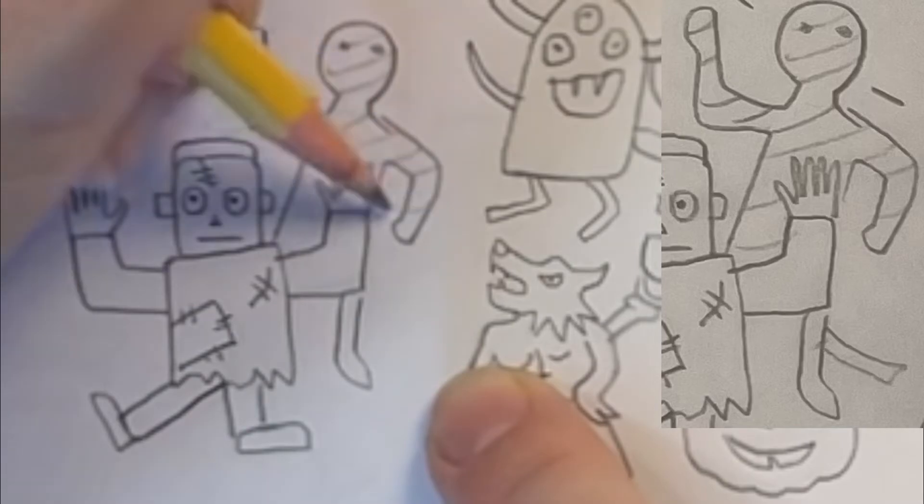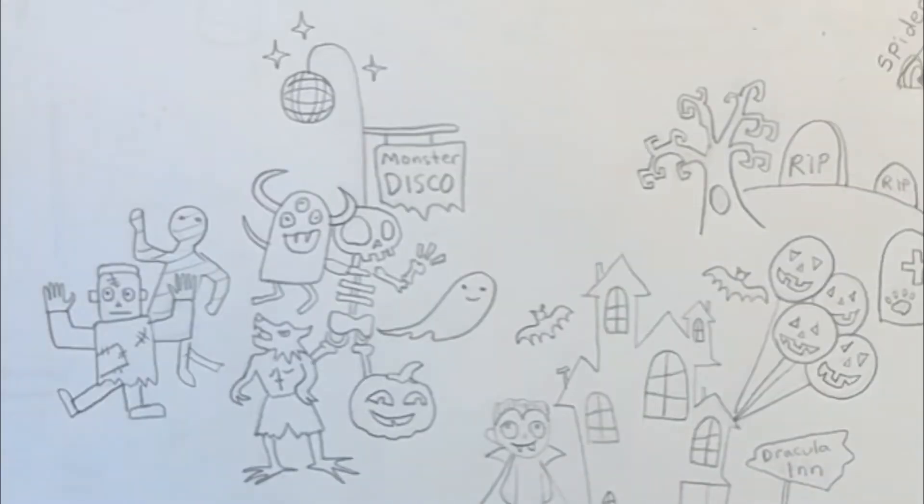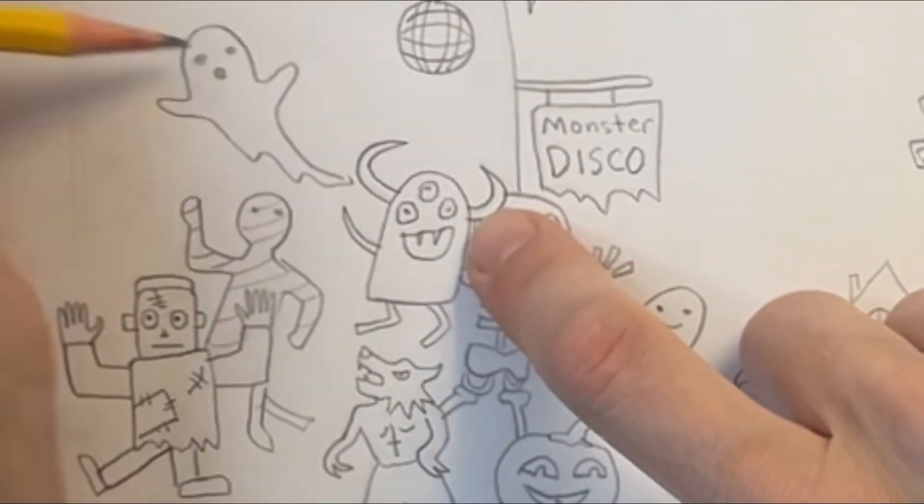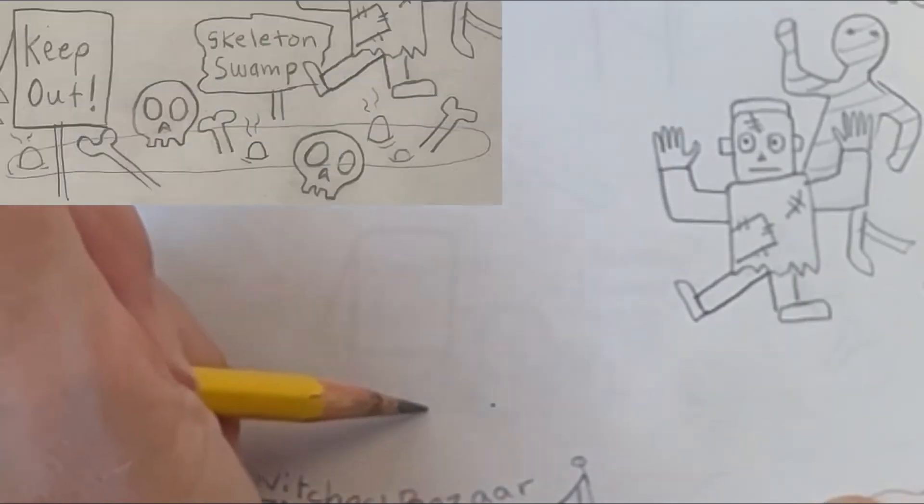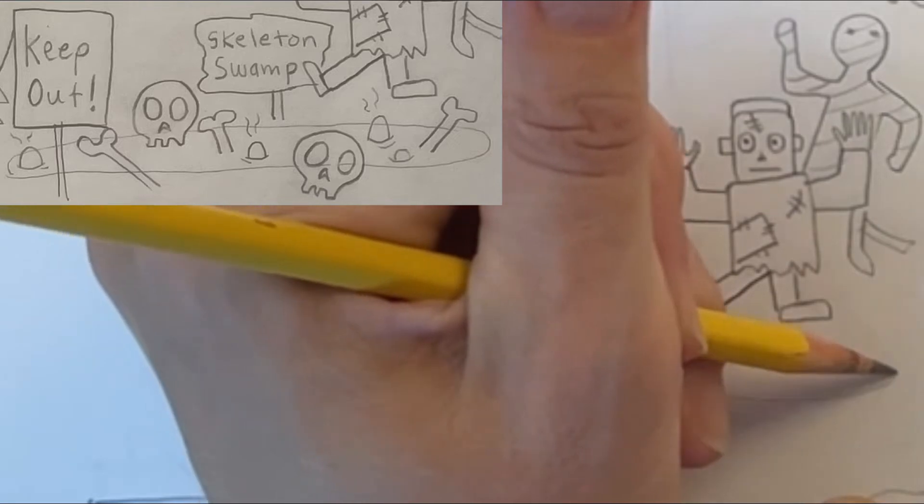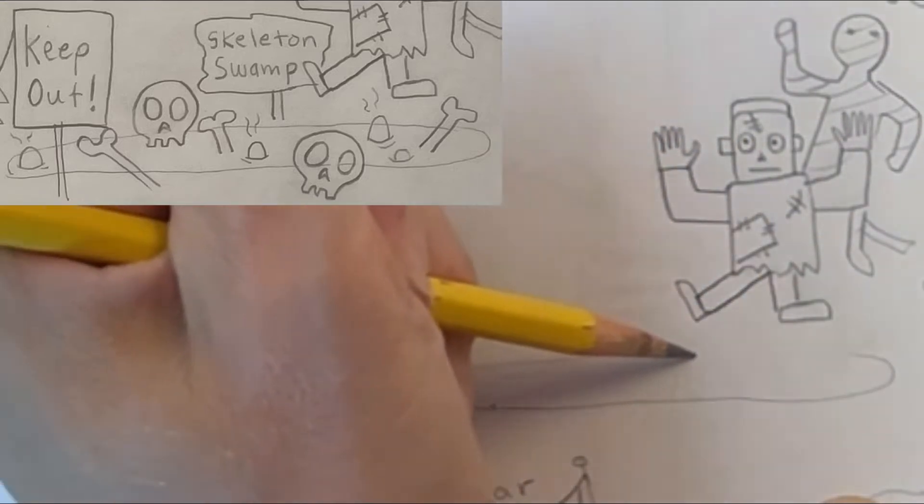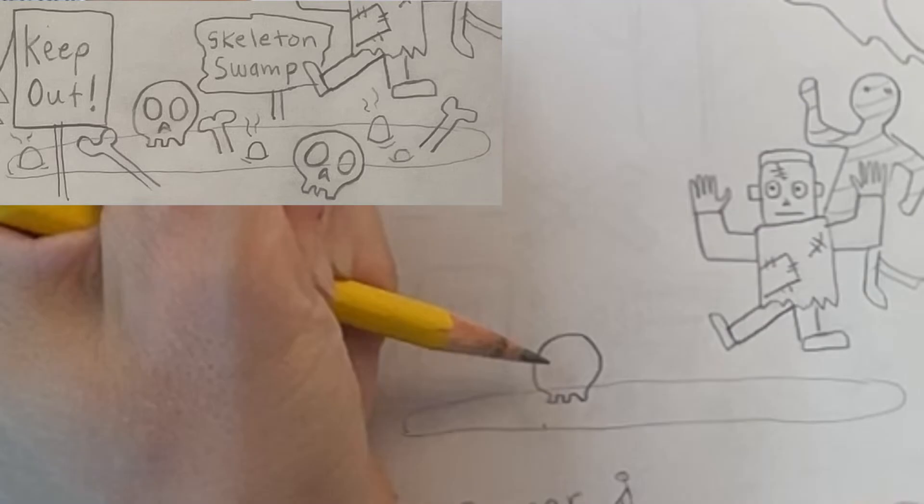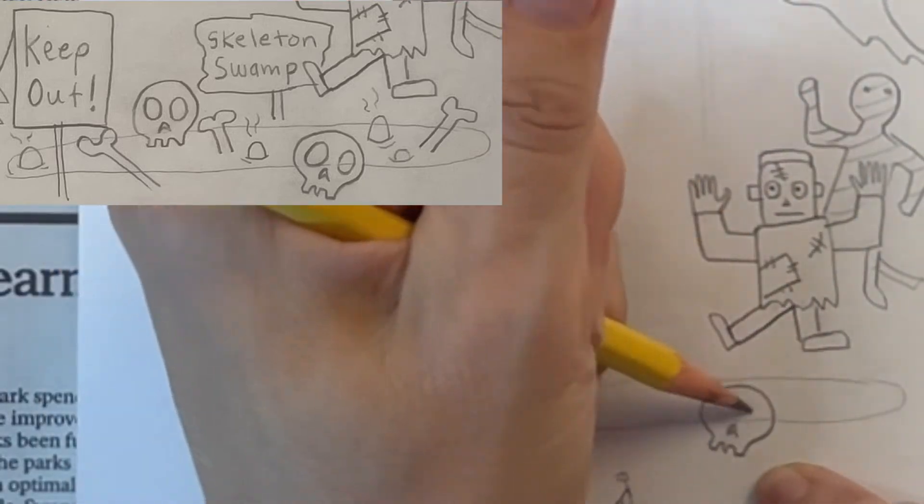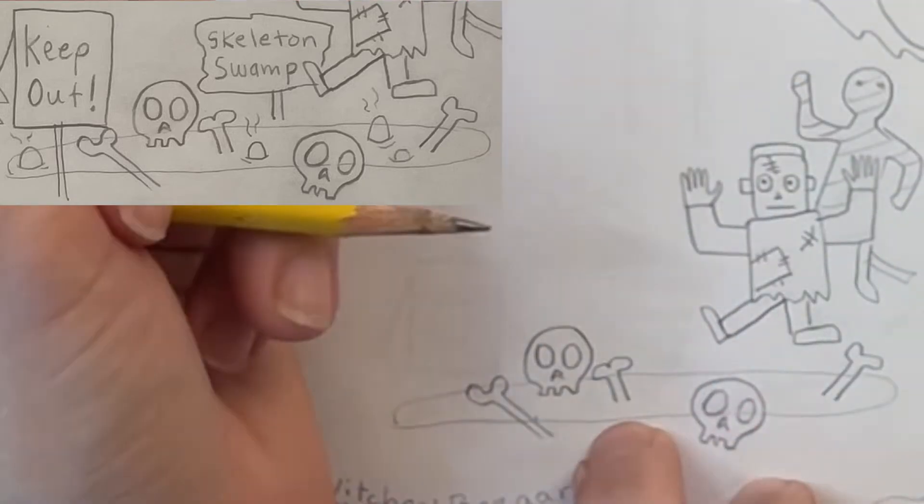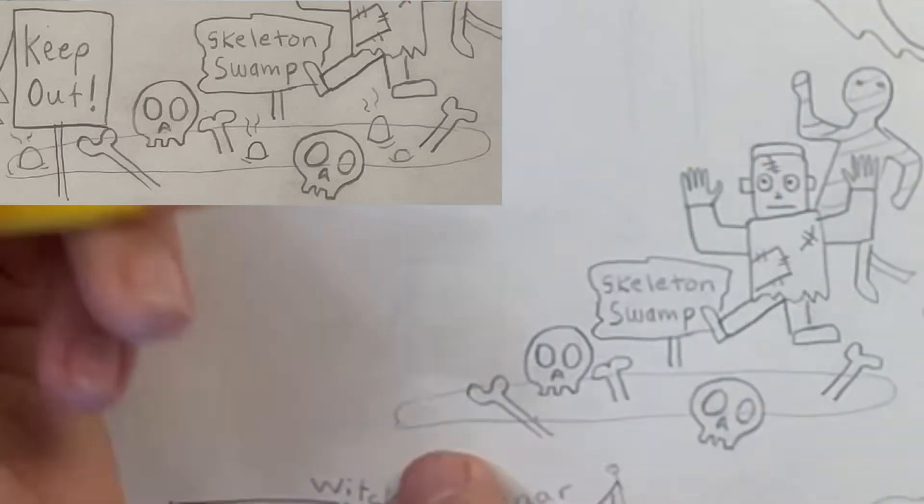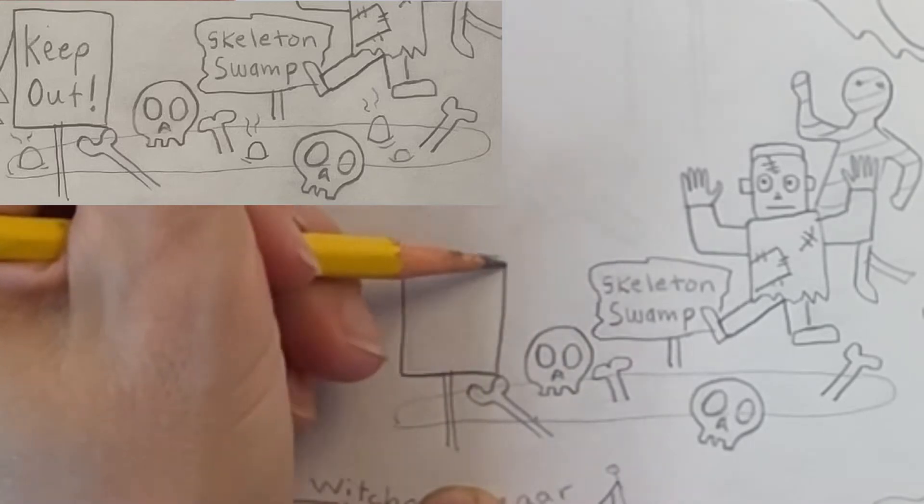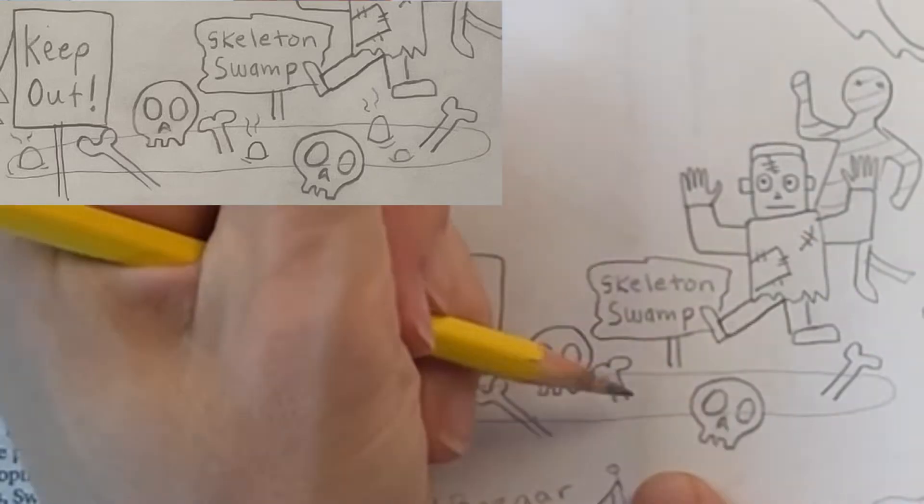Right behind Frankenstein, I'm adding a toilet paper mummy, and then above the mummy I'm going to put another ghost. Right in front of my dance party, I'm drawing a spooky skeleton swamp. I start with a long oval shape for the swamp water and then draw some skulls and bones sticking out of the water. I'm adding a sign here that says Skeleton Swamp.